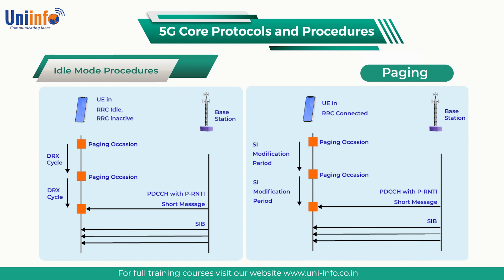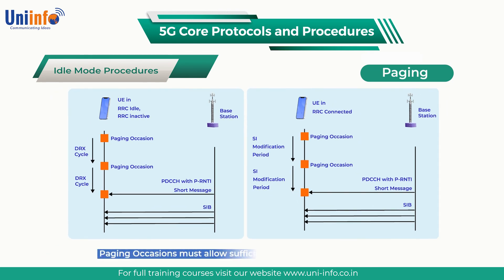Base stations which use multiple beams to provide coverage across the cell area are required to broadcast paging messages across all beams. For example, a base station which uses 8 beams to provide coverage will be required to transmit each paging message 8 times. This means that paging occasions must allow sufficient time for UEs to scan all the beams.